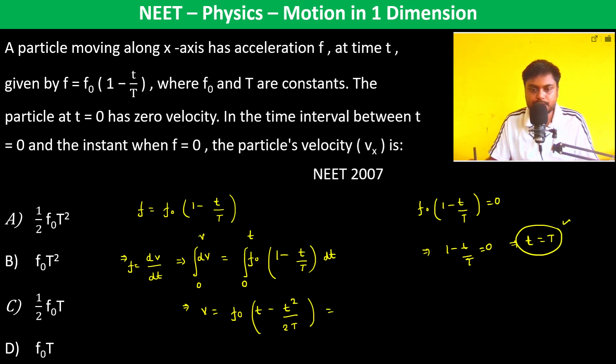So therefore this velocity equals f₀—sorry—T minus T square by 2T, which cancel. So this is f₀ into T by 2. So therefore C is going to be the answer.